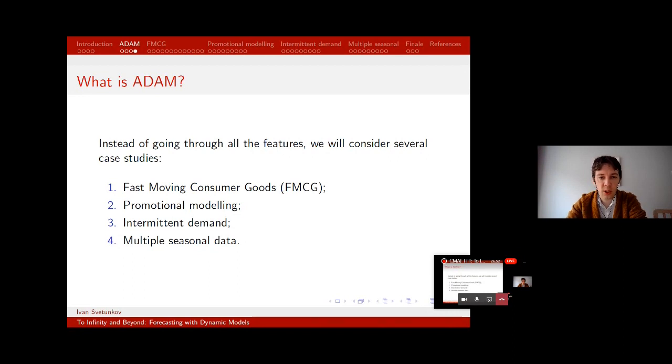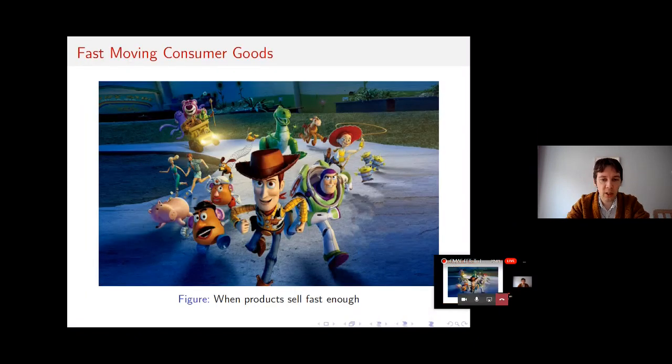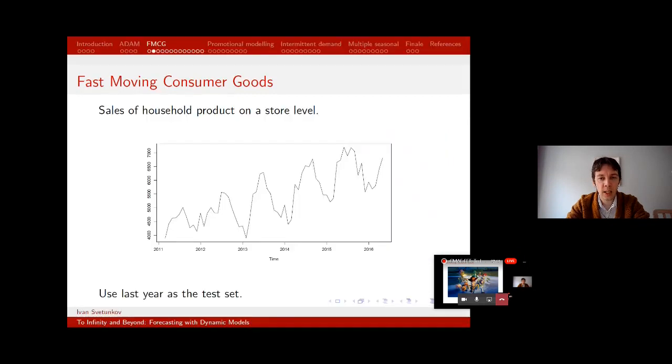The first is fast-moving consumer goods. So those products that are typically sold in retail and sold quite fine. Then some elements of promotional modeling, intermittent demand and multiple seasonal data. So let's start with fast-moving consumer goods. So those products that sell quite well. Here is an example. I have data sales of household products on a store level and we will use last 12 observations from this data for the test set just to see how the model performs.